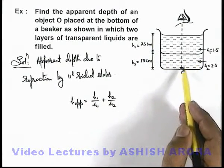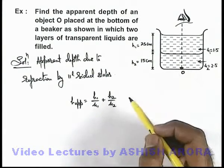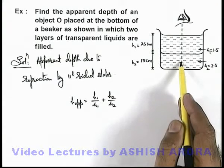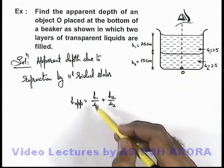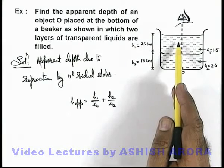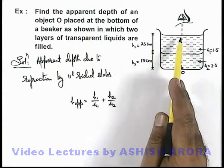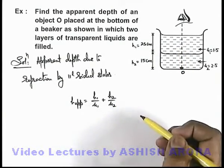Due to the first slab, the object will be shifted by a distance, and its apparent depth will be h1/μ1, which will act as another object for the second slab. This will provide another shift because of which its apparent depth will be changed to h2/μ2.